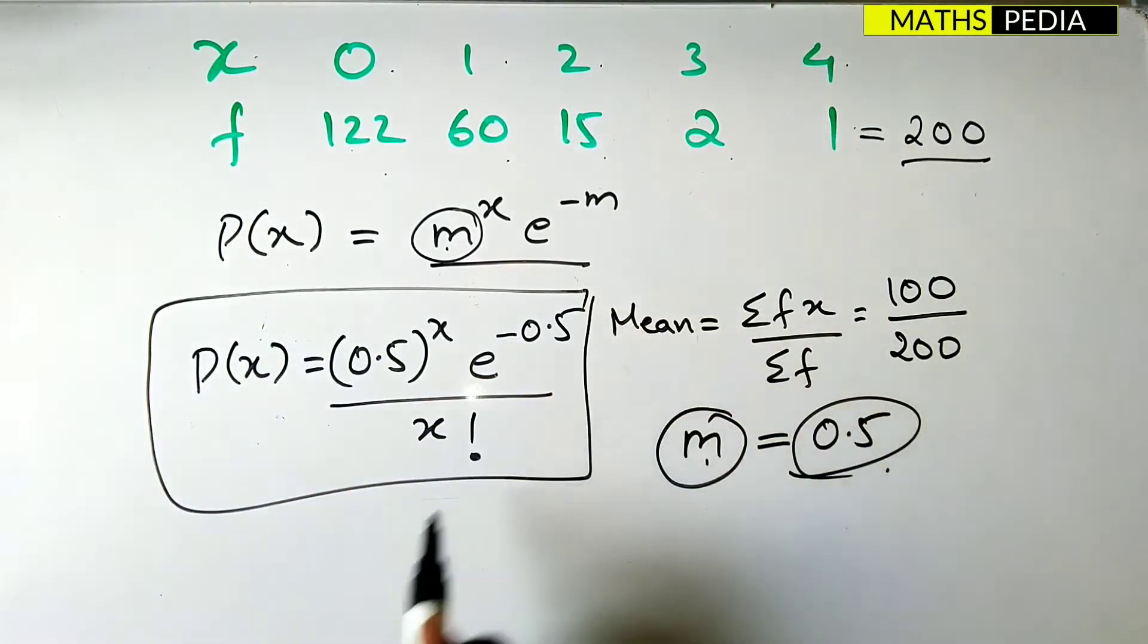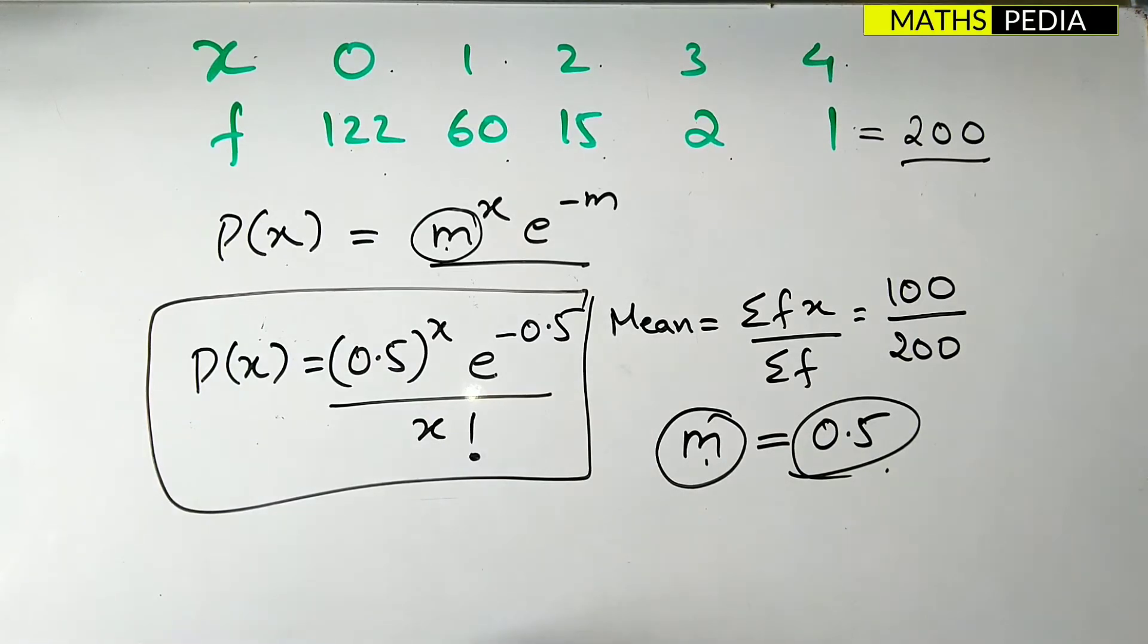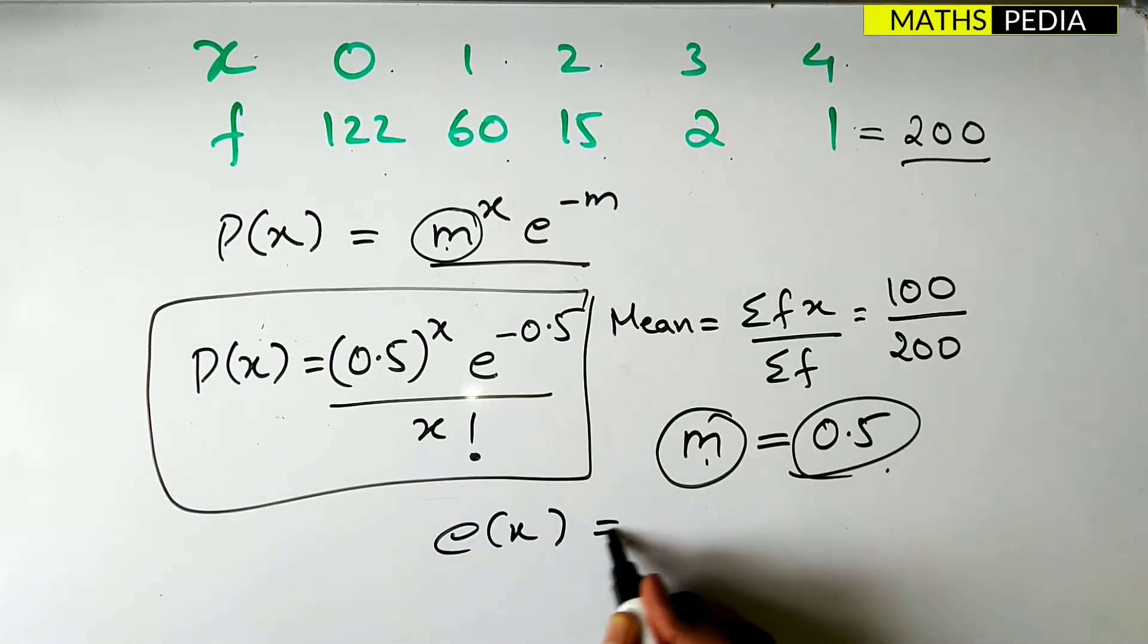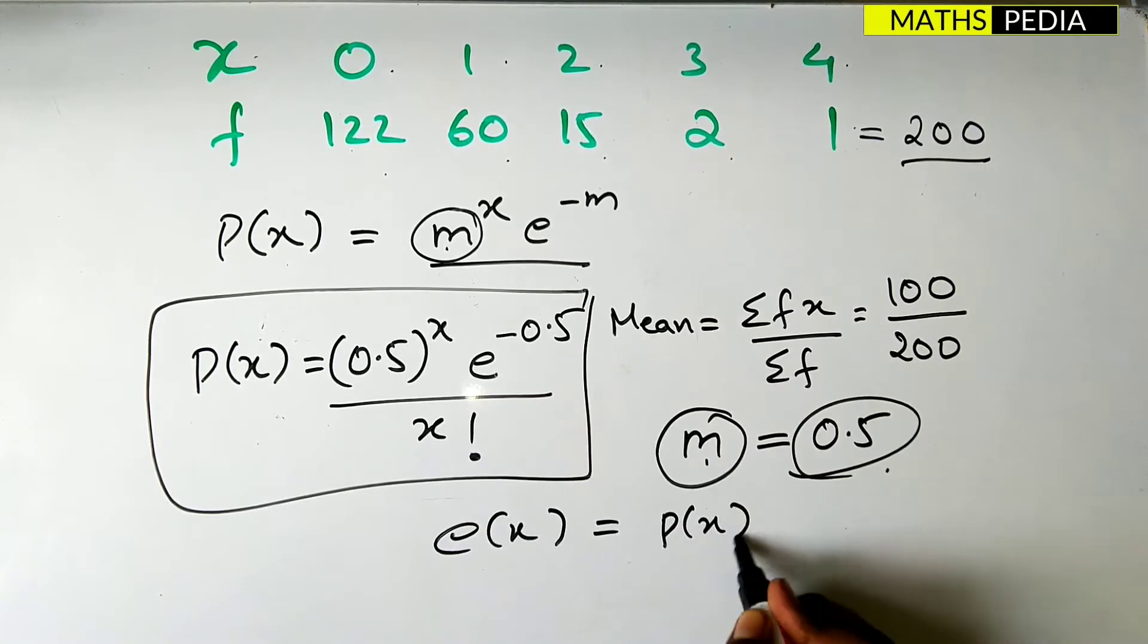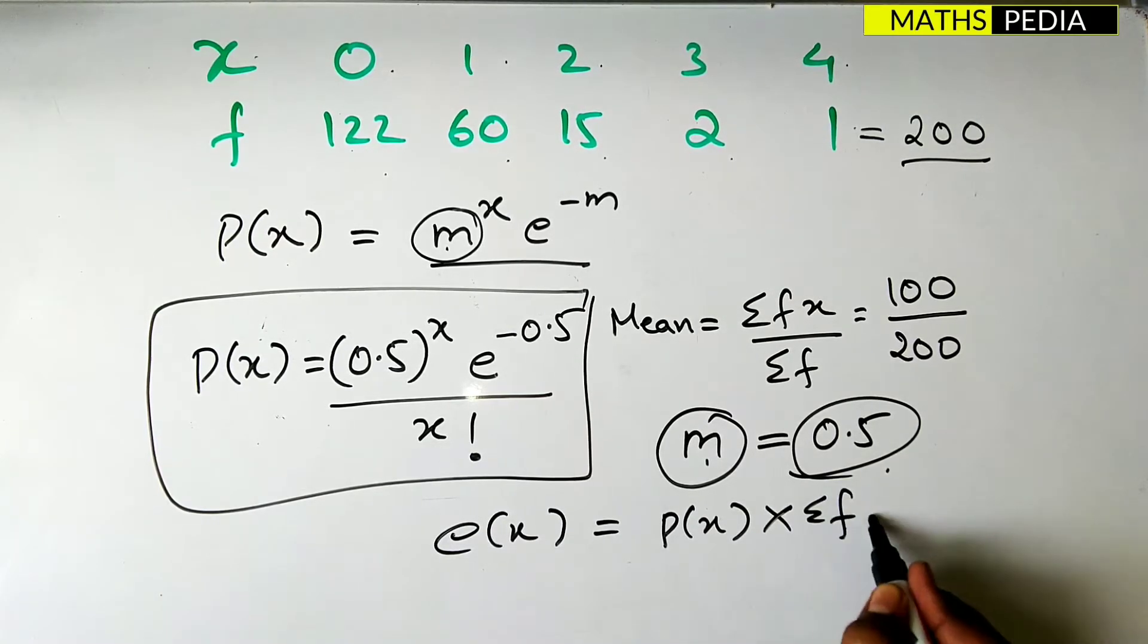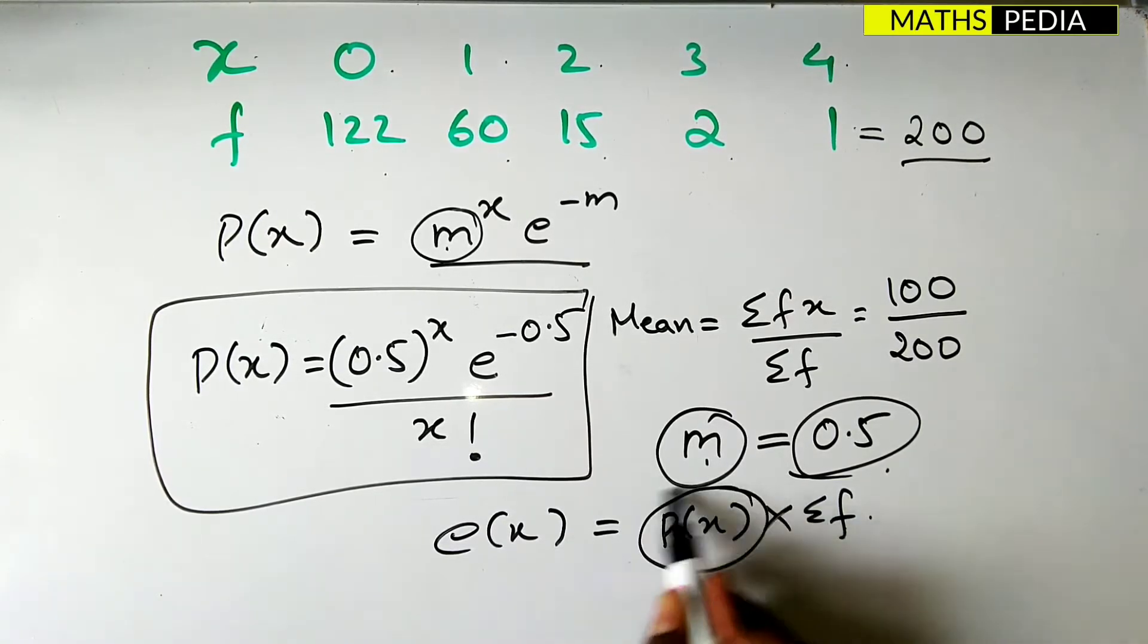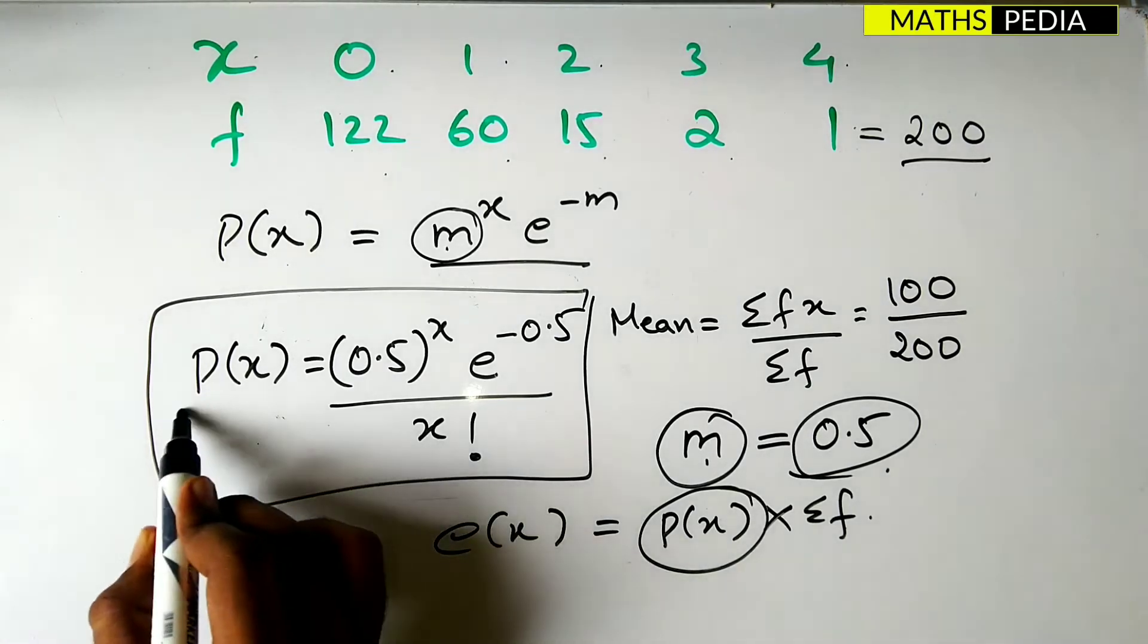Now we need to find the same method. The same method as we have discussed in binomial distribution also. So we have to, in order to find theoretical or expected frequency, we have to apply the same formula. That is e of x is equal to p of x into summation of f. So we need to find p of x.